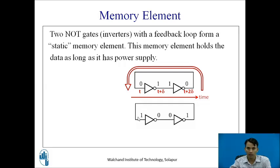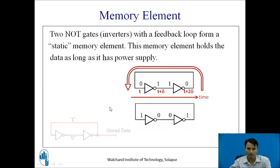Similarly, if you give 1 as input to store the data, 1 is converted to 0 by the first NOT gate, then 0 is converted to 1 by the second NOT gate, and this 1 is fed back in a loop indefinitely. So finally, the data given as input gets stored in the memory element.